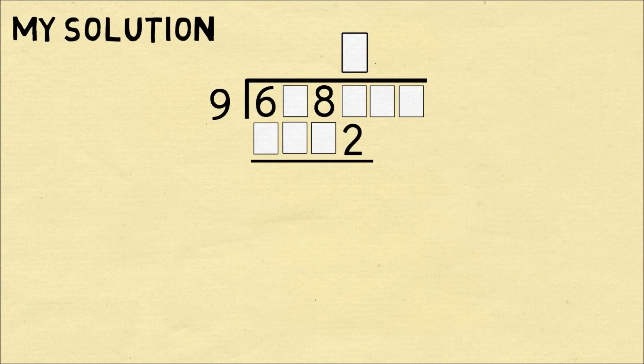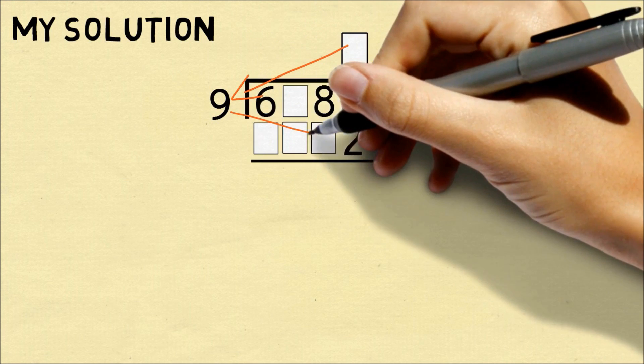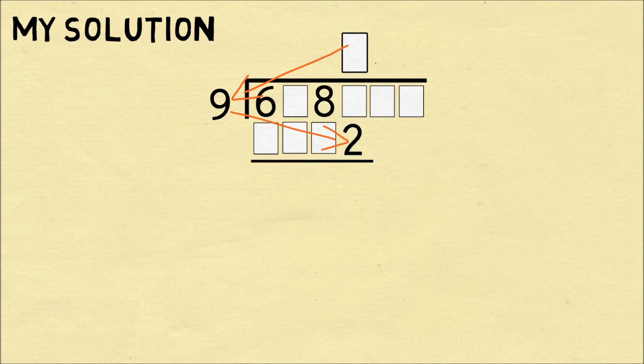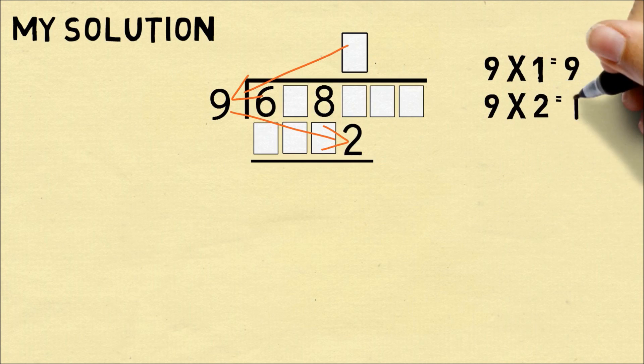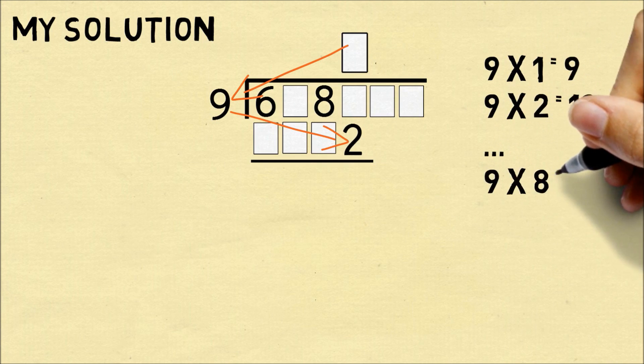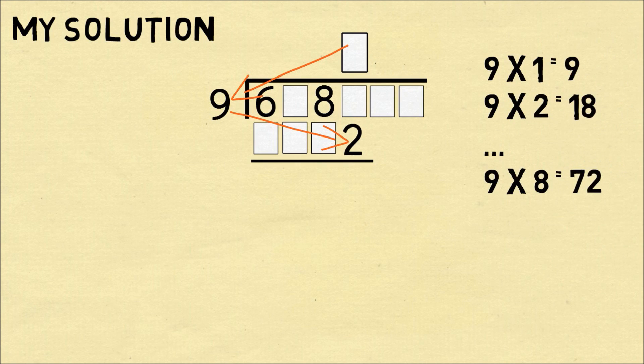So the first step of the long division procedure is we have nine times this number that's missing and that'll end up with the units digit of two. So we want to think what times nine could end up with the units digit of two. Going through the different possibilities, this only happens when we have nine times eight which is 72. So that means this missing digit here has to be an eight.